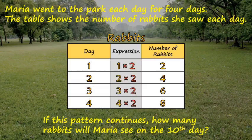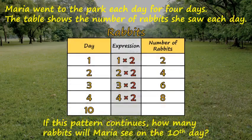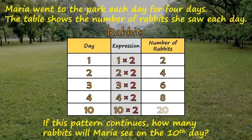Now back to our question: how many rabbits will Maria see on the tenth day? We're going to need a row for the tenth day, and then we're going to need to apply our rule or expression, which lands us at 20 rabbits on the tenth day.